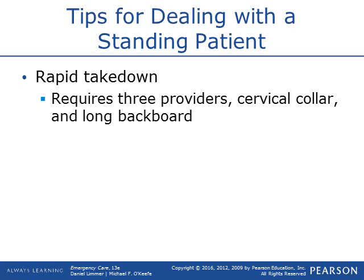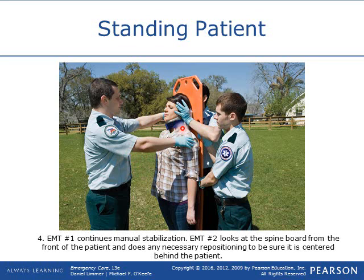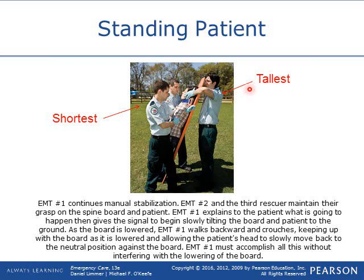To mobilize a standing patient — such as someone out walking around at a car accident complaining of neck and back pain — use a standing takedown. This requires at least three providers, a C-collar, and a long backboard. Apply the C-collar, then place the board behind them while standing. The tallest provider is at the head holding C-spine with arms wrapping around the board; the other providers put an arm through the patient's armpit grabbing the board, keeping the patient in line, then lower the board to the ground and secure them.